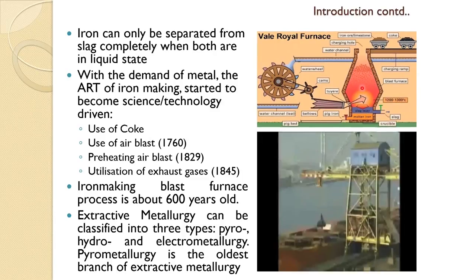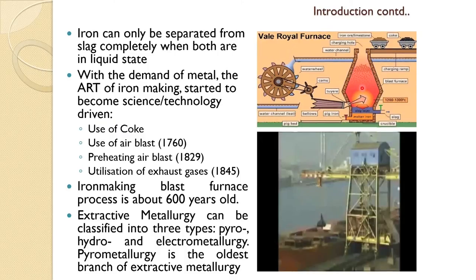Essentially, the iron making we have today is about 600 years old. It is a part of extractive metallurgy, which is classified into three types: pyro, hydro, and electro metallurgy. Pyro metallurgy is related to heat, and it is the oldest branch of extractive metallurgy. Iron making falls under this branch — pyro metallurgy.